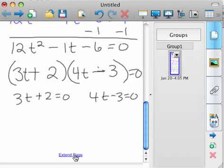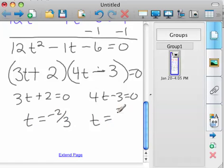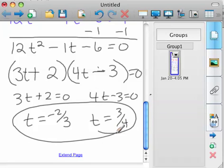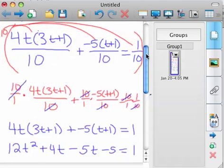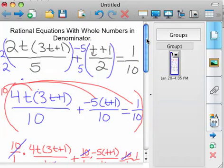And so minus the 2, divide by 3, so t is equal to negative 2 thirds, and t is equal to 3 fourths. And we found the two answers that satisfy the equation. It might be to your benefit to make sure you're right to take the negative 2 thirds and 3 fourths and plug it in to the original equation.